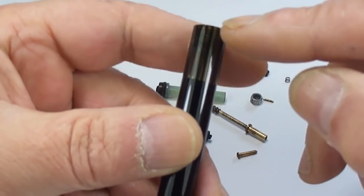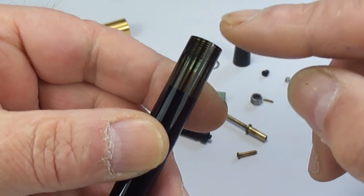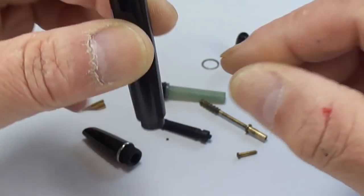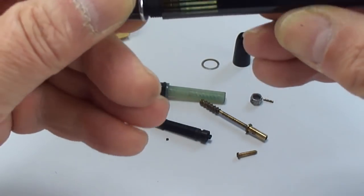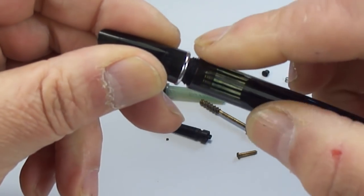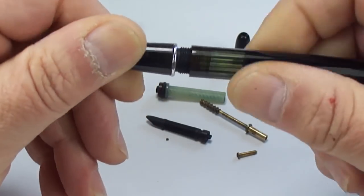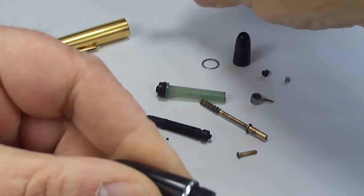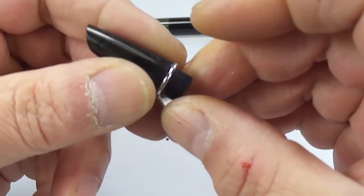Once you get the pen, what you'll need to do is heat the top there towards near the section. And once you've heated that, you will be able to unscrew this section. So give it some dry heat there. Again, be careful. And then what you should be able to do is take the section off. And then you'll have the feed and your nib inside.